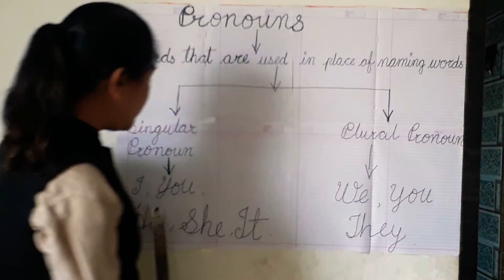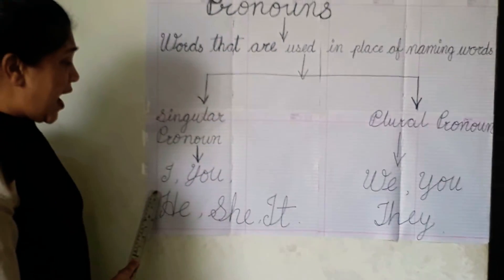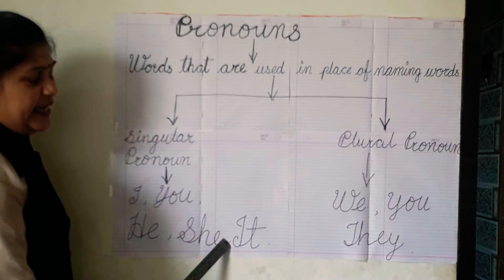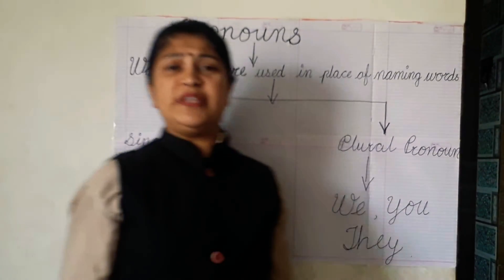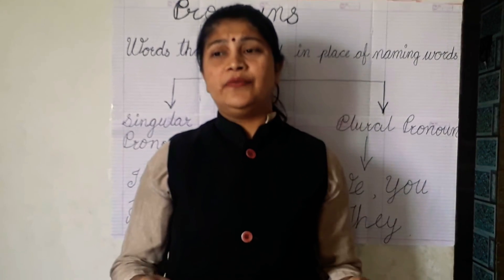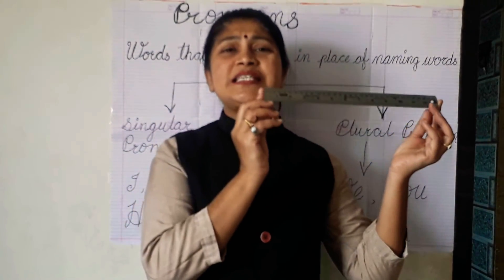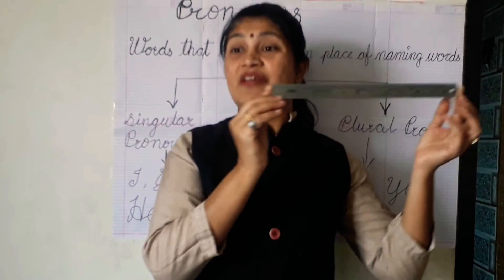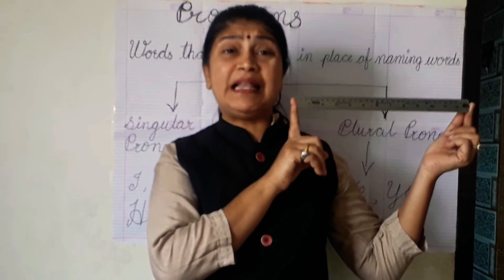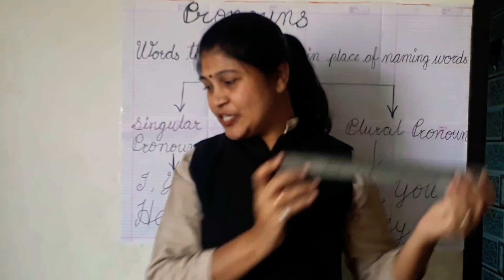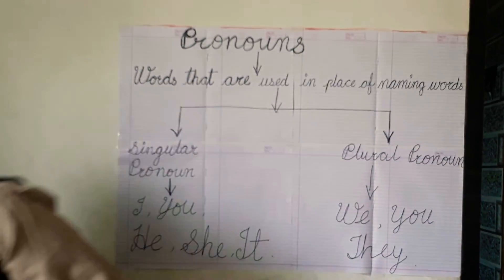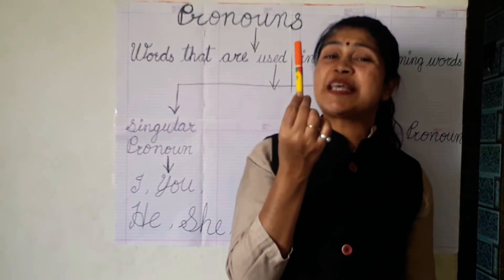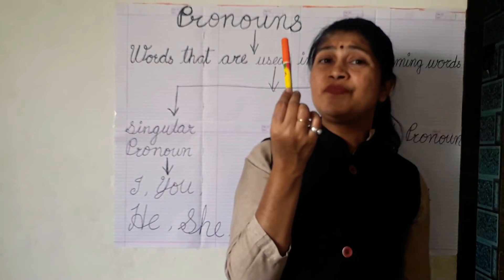How many singular pronouns are there? I, you, he, she, it. Now you tell me, you give me the answer. What is this? This is a scale. Which pronoun we use for the scale? It. Now, this is a sketch pen. Which pronoun we use for the sketch pen? It.